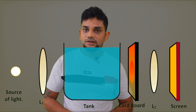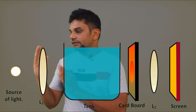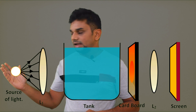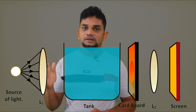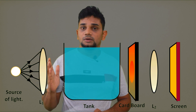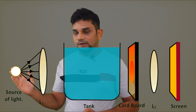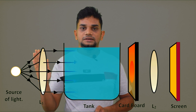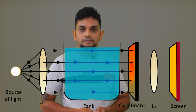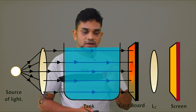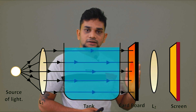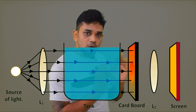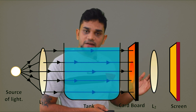When we transmit light from the source, convex lens L1 will make parallel beams of light. Those parallel beams pass through the water in the tank. The cardboard controls the amount of light, and through the hole in the cardboard, the light enters the second lens L2.